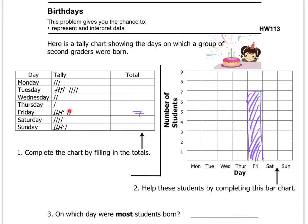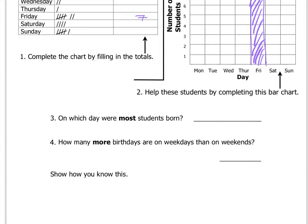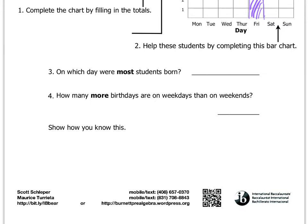Based on this information, you'll have the numbers on this side from doing number 1. Then it says number 3 says, on which day were most students born? So you can easily look at this bar graph up here, and whichever day has the tallest bar will tell you which day most students were born.